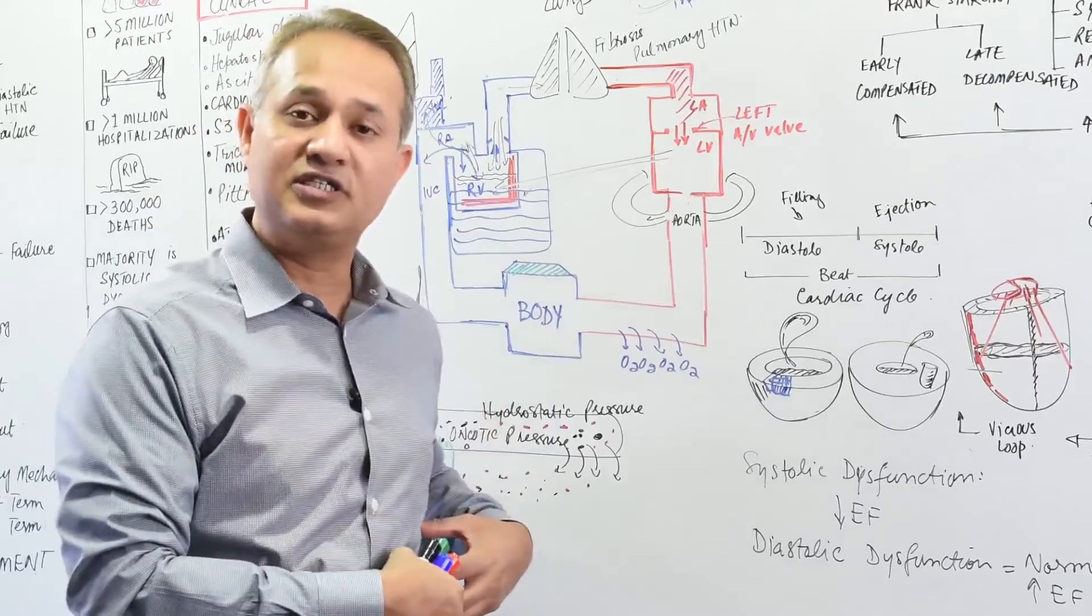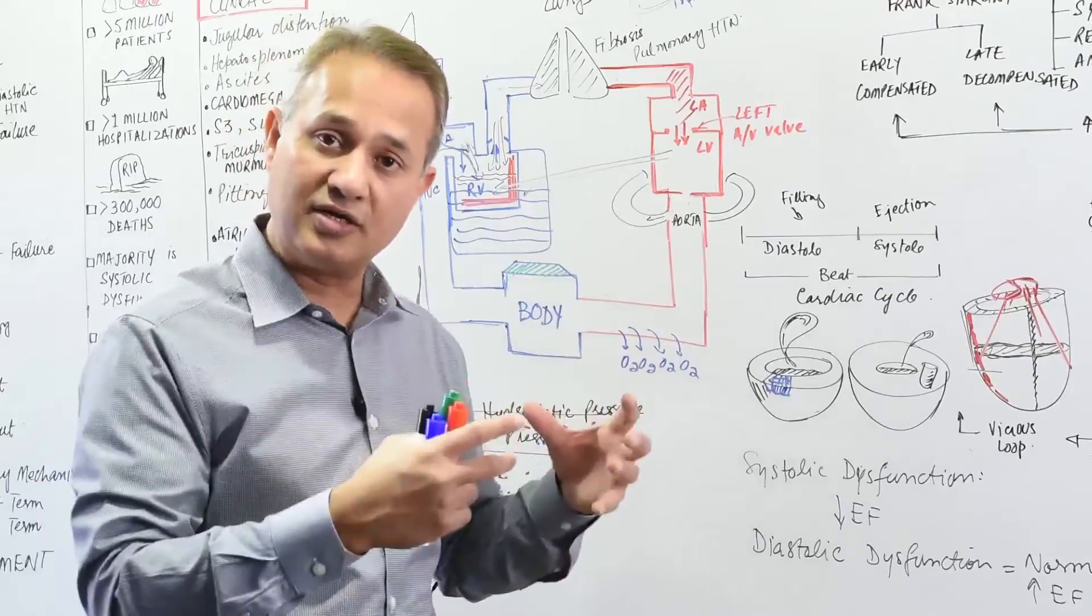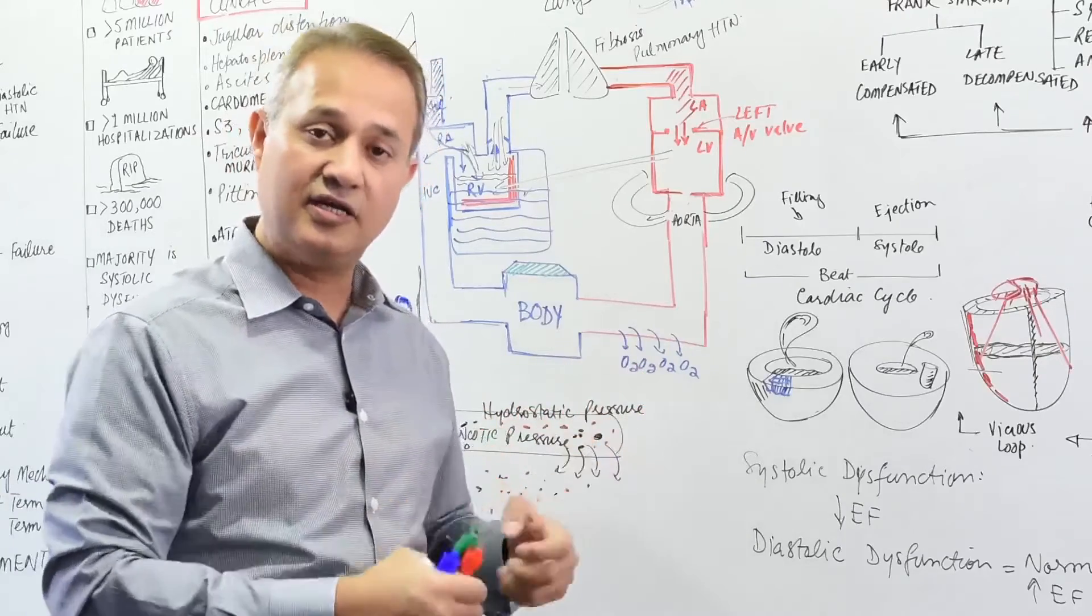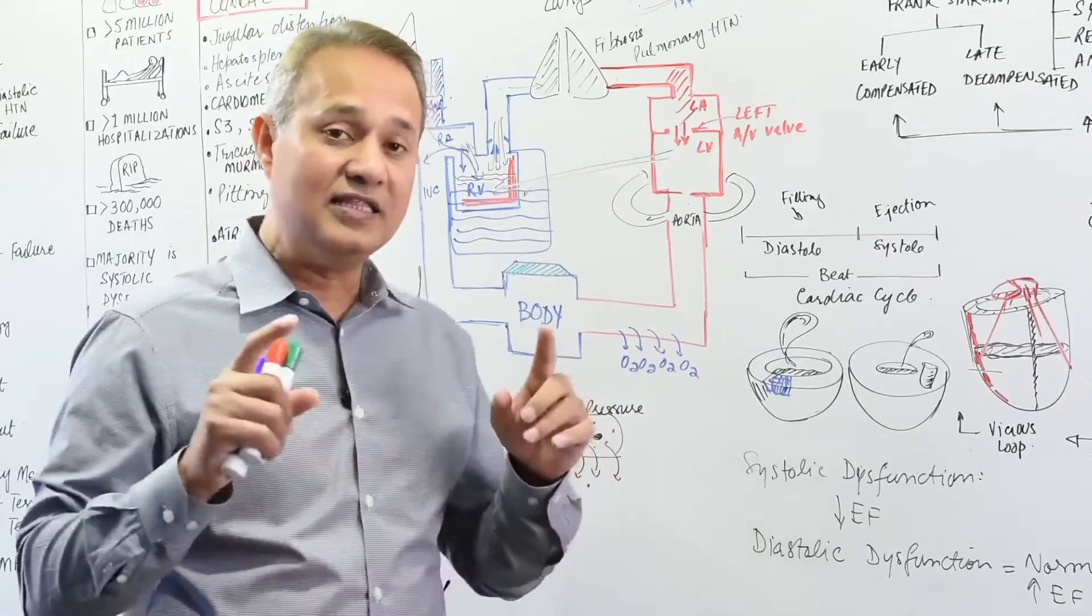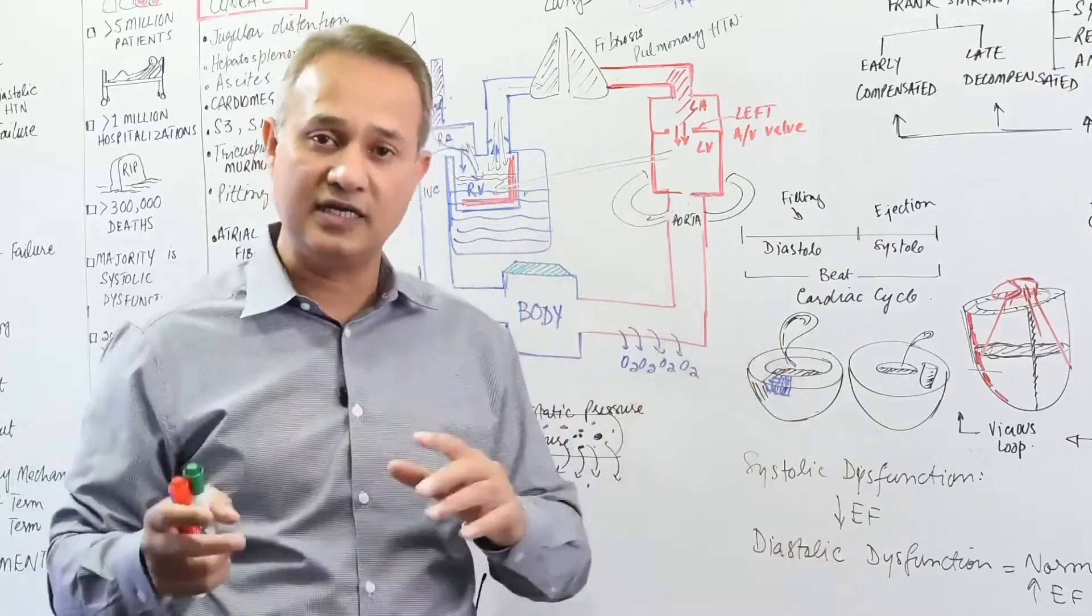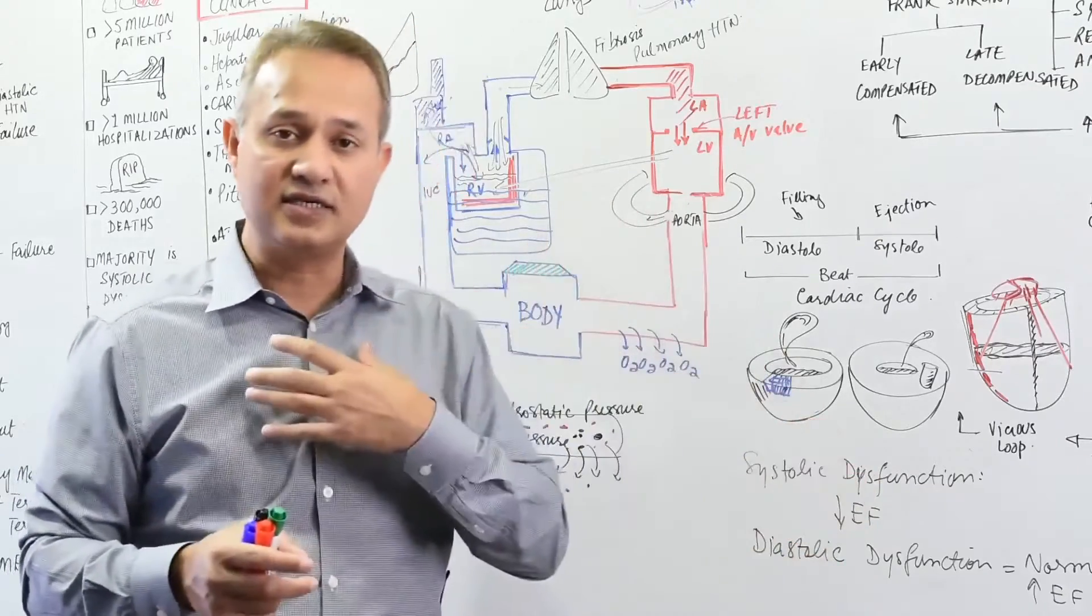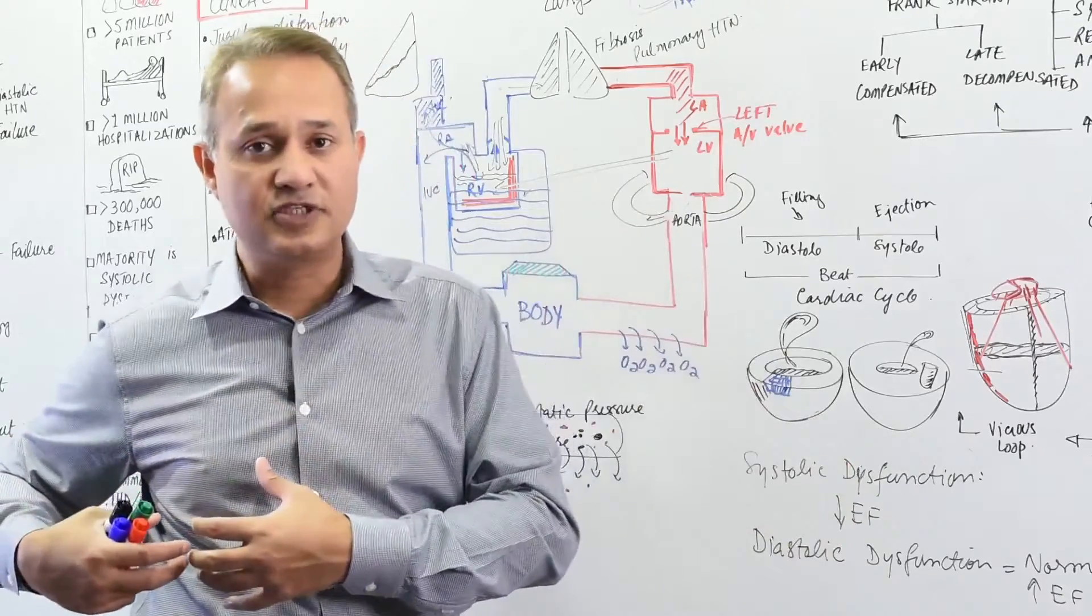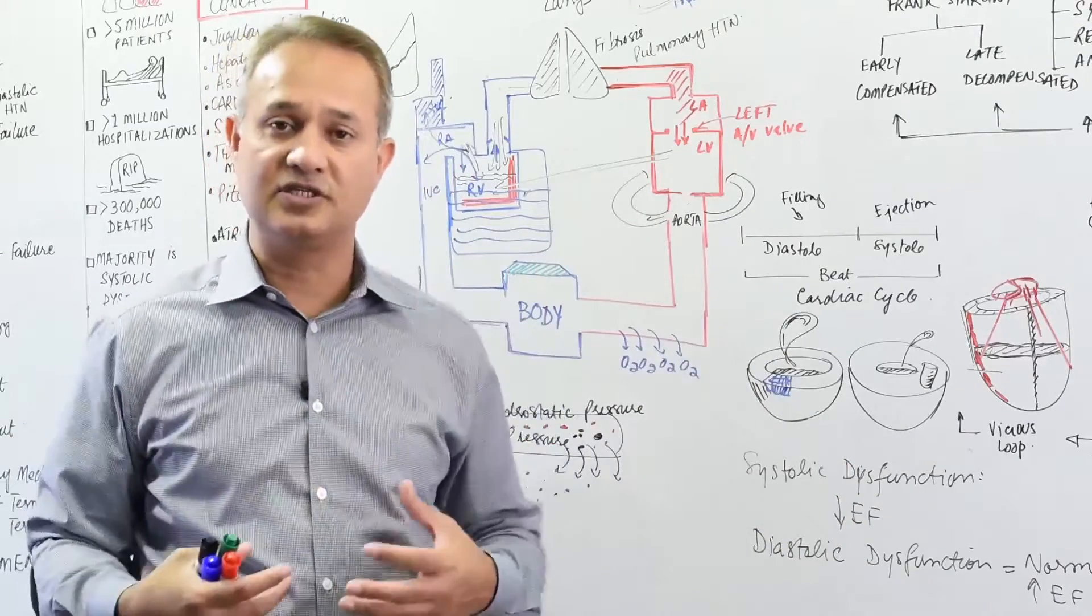In some patients, the spleen would also be bigger because of the congestion in it. So hepatosplenomegaly - these are congestive. That is why this is also called congestive heart failure, both right and left. In the case of left, lungs are congested. In the case of right, the visceras, GIT visceras in the body are congested.